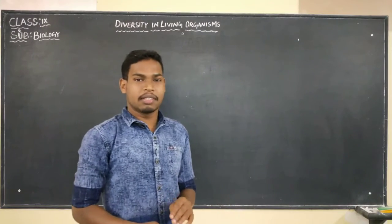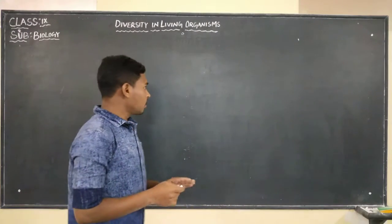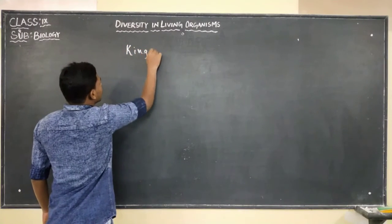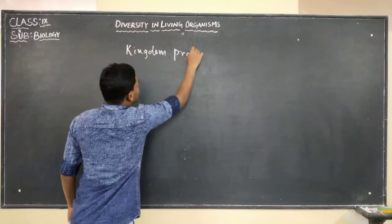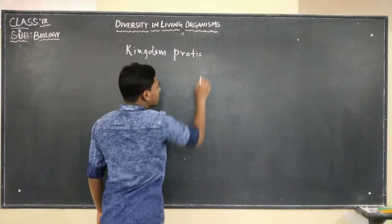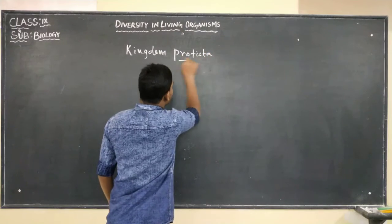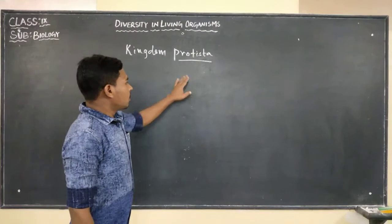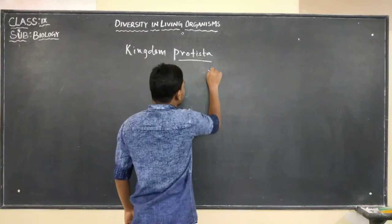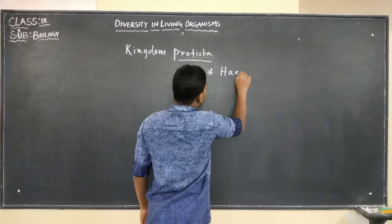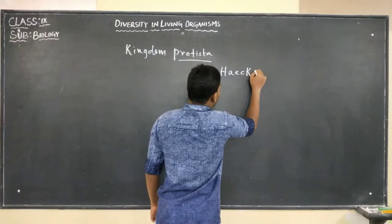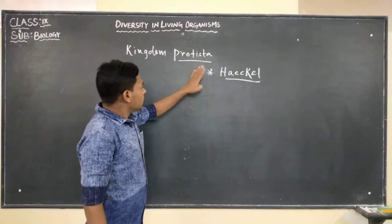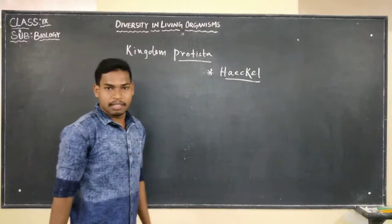In this module, we are going to discuss the Kingdom Protista. We have completed Kingdom Monera, so in this module we are going to discuss about Kingdom Protista. The word Protista was given by Haeckel — the term Protista was given by Haeckel.